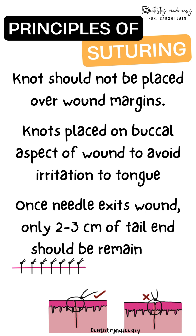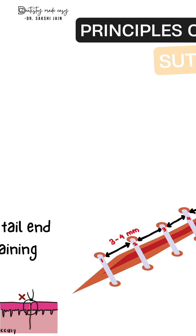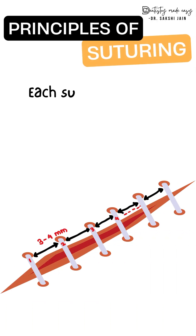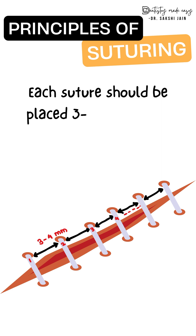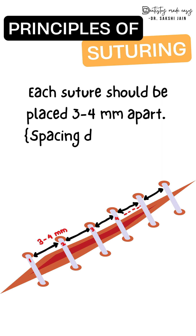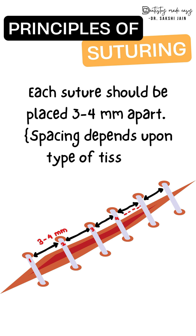Once the needle exits the wound, only about two to three centimeters of the tail end should remain. Each suture should be placed three to four millimeters apart — this depends on the type of tissue being sutured, but usually the distance between two sutures is three to four millimeters.